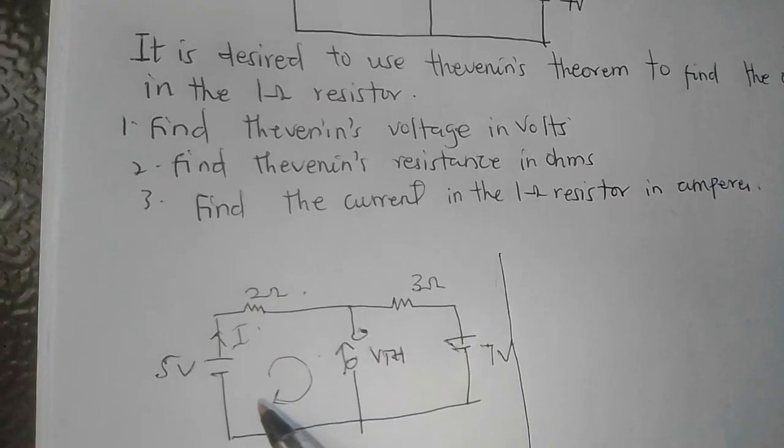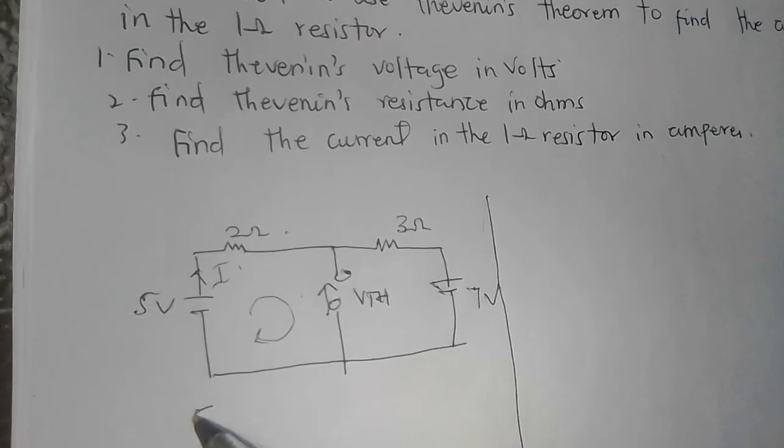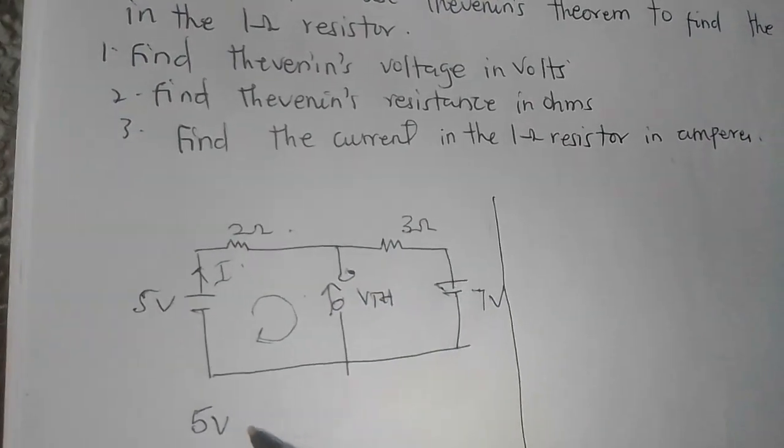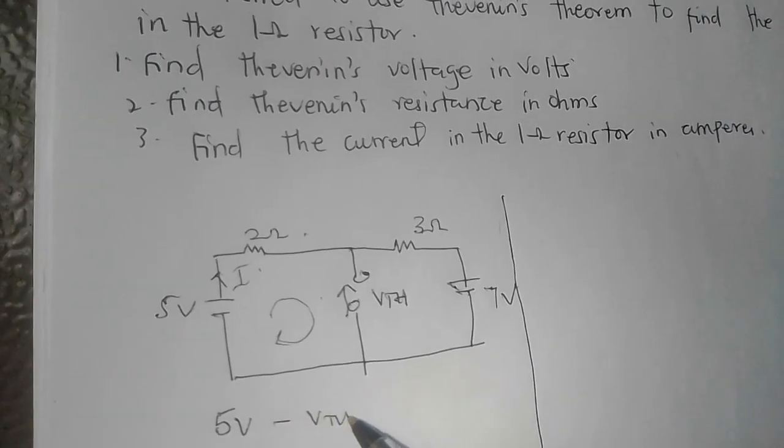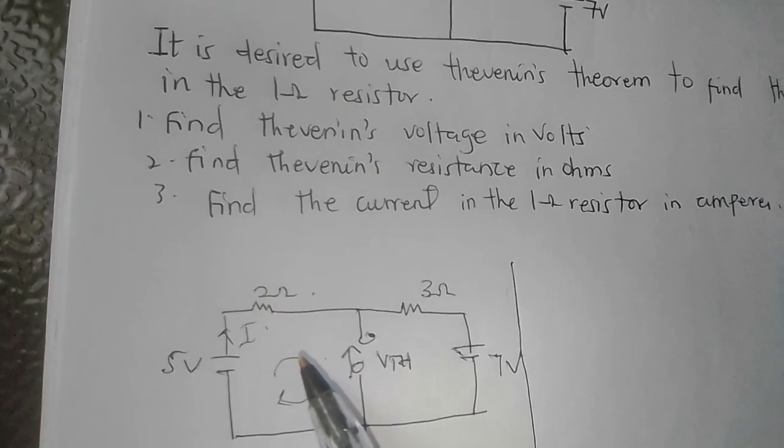In this loop, the total voltage is equal to 5V. Since it's against the VTH, minus VTH should be equal to the sum of the voltage drops. You only have a single resistor in this loop, it's 2 ohms, so the voltage drop is simply 2I.